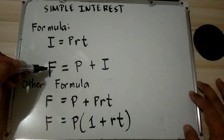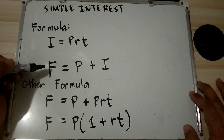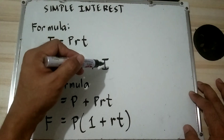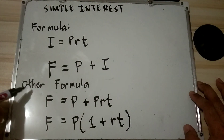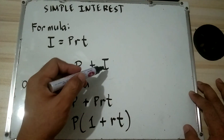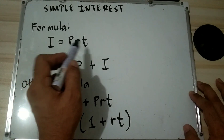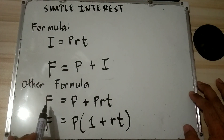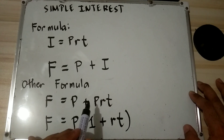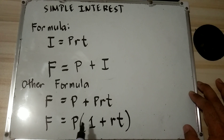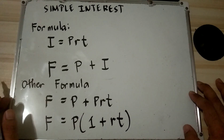The maturity value F is equal to Principal plus Interest. Another formula: F = P + PRT, and since I = PRT, we substitute to get F = P(1 + rt), factoring out the principal.